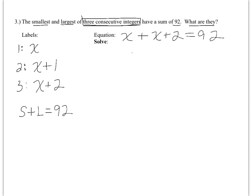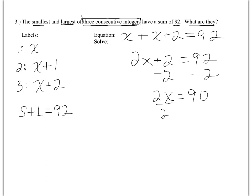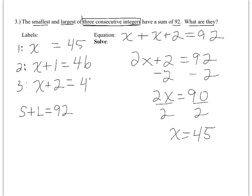Combining like terms: 2x plus 2 equals 92. Subtracting 2 from both sides gives 2x equals 90. Dividing by 2 gives x equals 45. So the three integers are 45, 46, and 47. To check: the smallest plus the largest is 45 plus 47 equals 92. Correct.